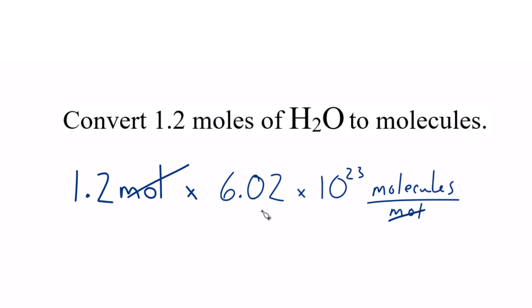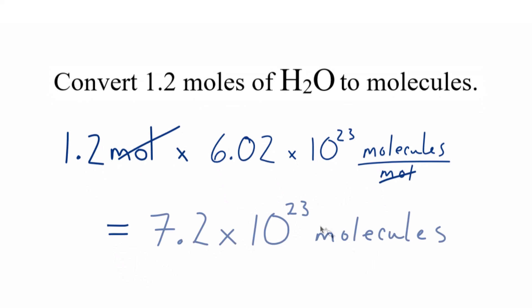So 1.2 times 6.02 times 10 to the 23rd. We get 7.2 times 10 to the 23rd molecules of water. So that's how you convert from moles of water to molecules.